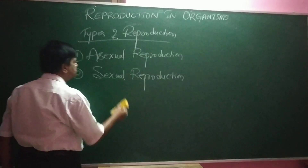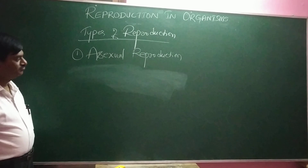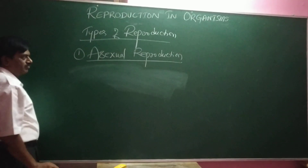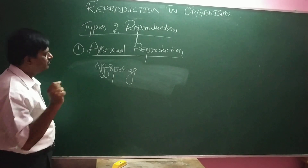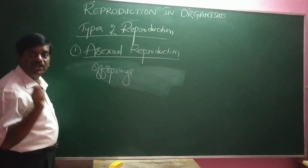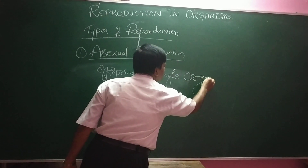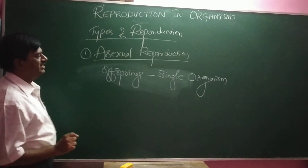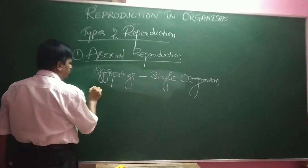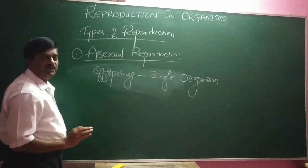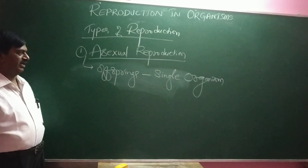We start with asexual reproduction. The meaning of asexual reproduction: it is the formation of offspring from a single organism. This is called asexual reproduction.